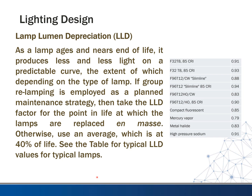Lamp lumen depreciation, abbreviated LLD: as a lamp ages and nears end of life, it produces less and less light on a predictable curve, the extent of which depends on the type of lamp. If group relamping is employed as a planned maintenance strategy, we take the LLD factor for the point in life when these lamps are replaced en masse. Otherwise we use an average, typically at 40% of life. Fluorescent lamps are usually in the low 90s, compact fluorescent 0.85, mercury vapor 0.79, metal halide 0.83 — depending on what lamp you use, this will affect the lamp lumen depreciation.